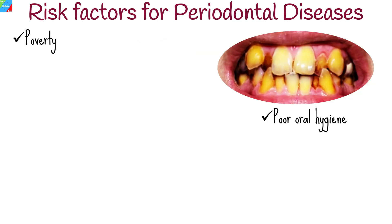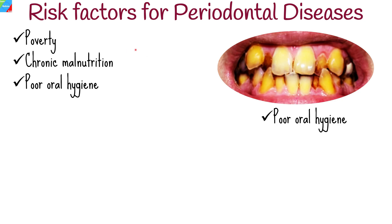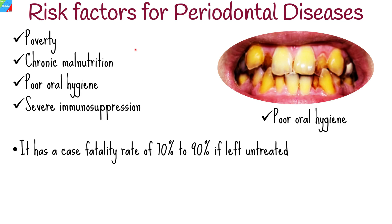Risk factors for periodontal disease include poverty, chronic malnutrition, poor oral hygiene, and severe immunosuppression. The case fatality rate is 70% to 90% if left untreated.